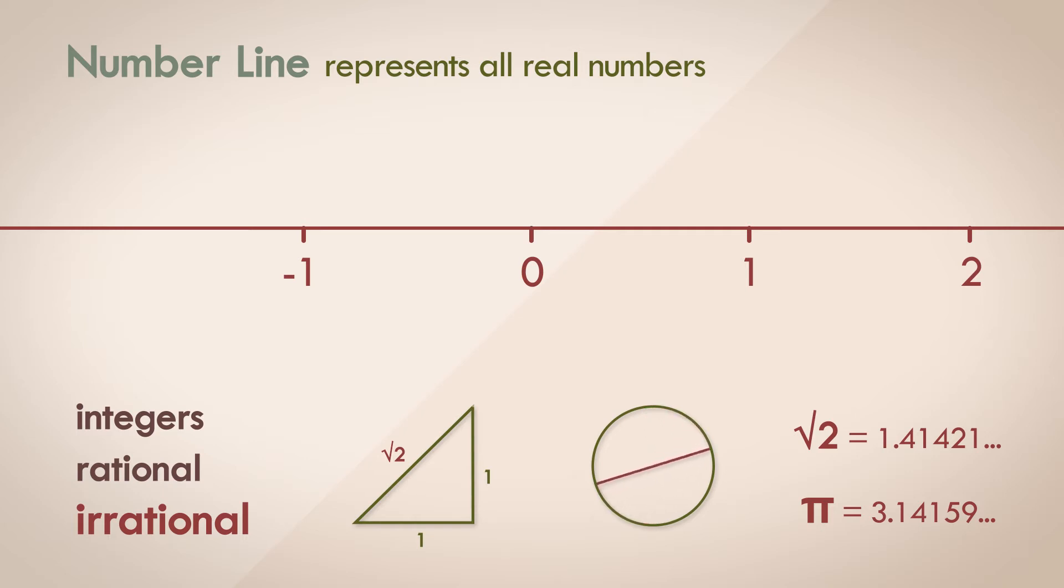These are numbers that are non-terminating and non-repeating. They carry on forever, and no matter how far along you traverse through the number, you'll never find a repeating sequence. But they can still be represented on a number line of real numbers.